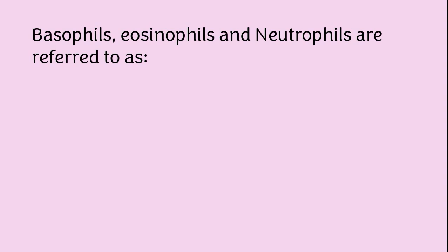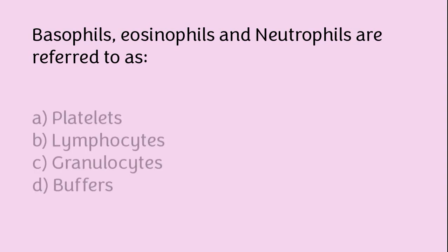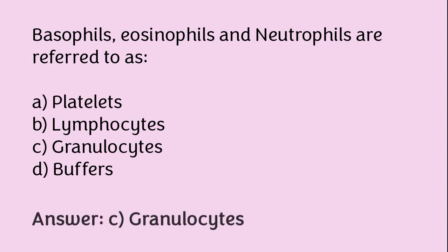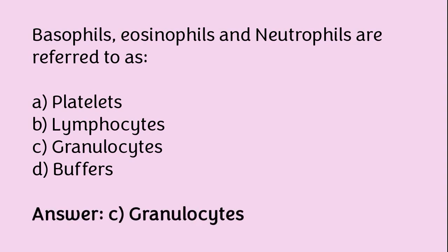Basophils, eosinophils, and neutrophils are referred to as: platelets, lymphocytes, granulocytes, or buffers? The correct answer is option C. Basophils, eosinophils, and neutrophils are referred to as granulocytes.